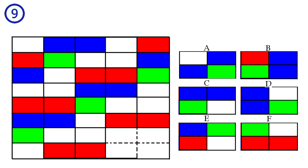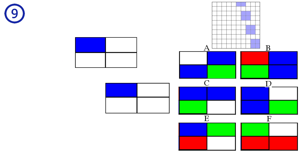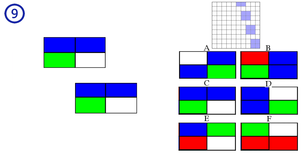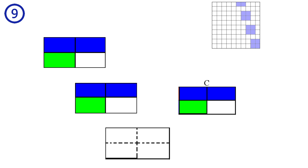Puzzle number nine. Again, we have a similar pattern where there are two-by-two repeats, but here they repeat differently. Every two-by-two square is identical to the two-by-two square that is one unit to the left and three units up of that square. For example, here, here, and here. To solve the puzzle, we just look at these repeats, giving answer C as the correct answer.